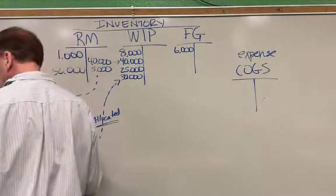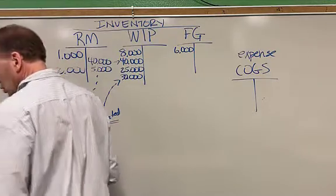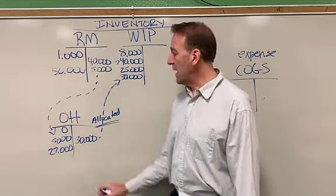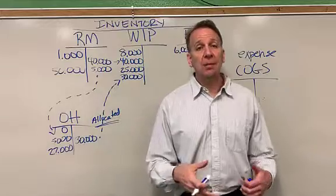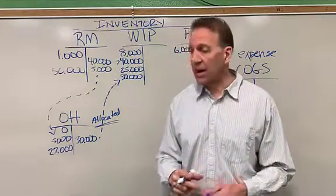Let's assume that we also had additional overhead costs of $27,000. So we had $5,000 of indirect materials. We had another $27,000 that's made up of indirect overhead, such as indirect labor and other indirect costs.